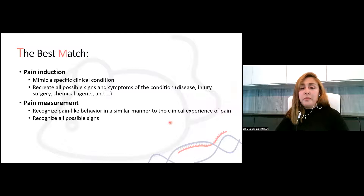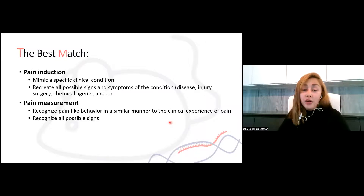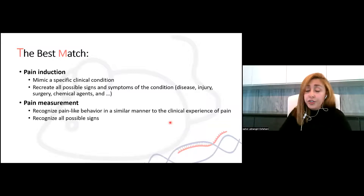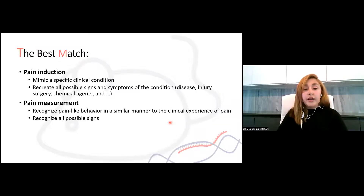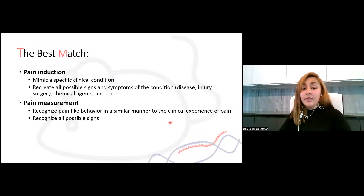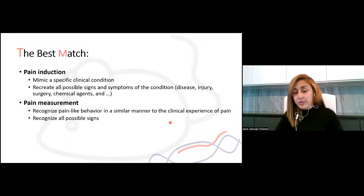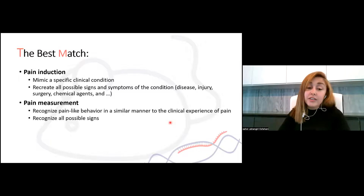We want to reach the best match for our experimental designs. That means the pain induction method should mimic a specific clinical condition and recreate all possible signs and symptoms of that condition, whether it's coming from a disease, injury, surgery, chemical, or anything else. The second most important thing is how we are going to measure that pain — the measurement method should recognize pain-like behaviors in a similar manner to the clinical experience and possibly recognize all possible signs that patients show.